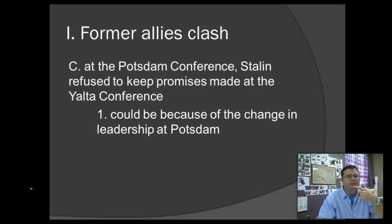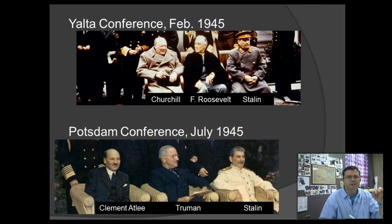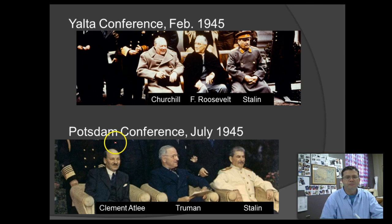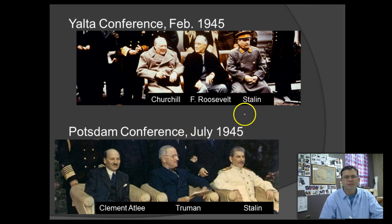The first meeting of the Allied leaders — the United States, Russia, and England — takes place at Yalta. At the Potsdam Conference, Stalin refuses to follow through with promises he made at Yalta, possibly because of leadership changes. At Yalta in 1945, the Big Three were Churchill for England, President Roosevelt for the United States, and Stalin for Russia. At Potsdam, just a few months later, England has a new prime minister, Clement Attlee, after Churchill's party lost the election. President Roosevelt died on April 12, 1945, and Vice President Truman became president. So the only consistent person — the constant — is Stalin, and he may have thought he could exercise power over the two newcomers and go back on some promises made at Yalta.